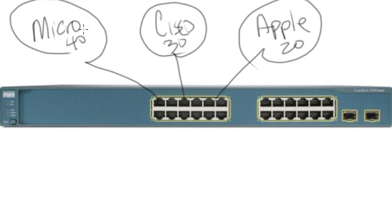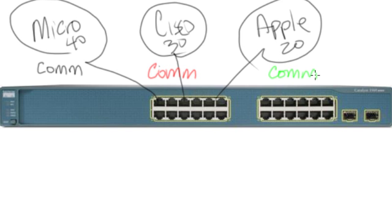So what's the solution to that? The solution is private VLANs. We can create a community VLAN for Microsoft, a different community VLAN for Cisco, and yet a third community VLAN for Apple. As a result, we can put all those devices in their own respective community VLANs, and all they can talk to is each other. So all the Apple servers can talk to each other, all the Cisco devices can talk to each other, and all the Microsoft devices can talk to each other inside their respective VLANs.